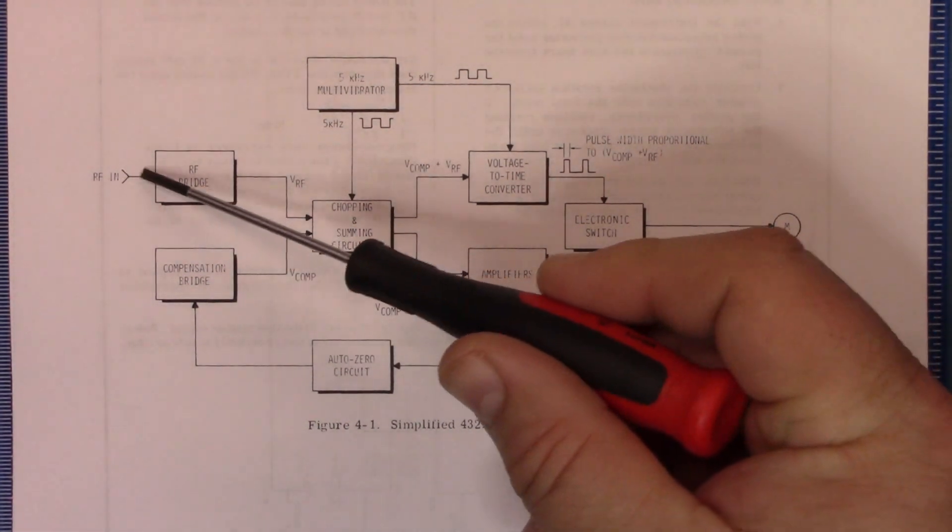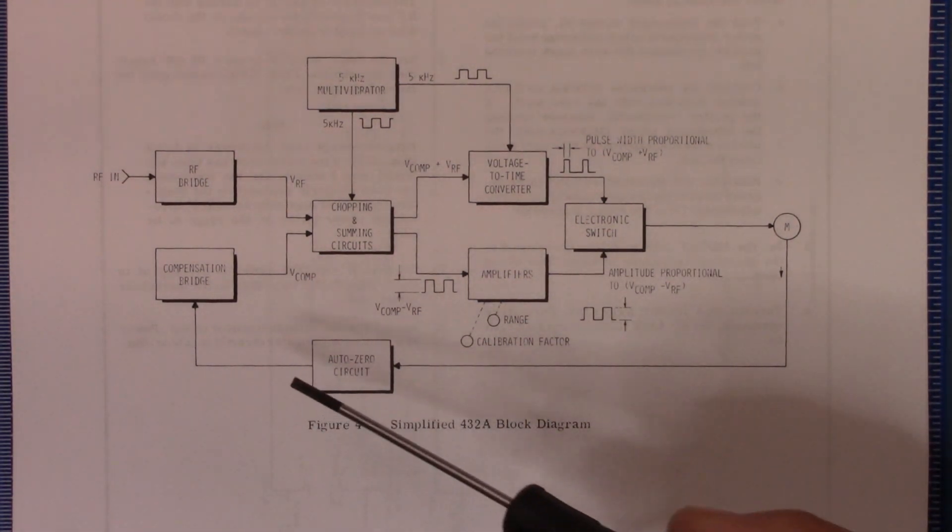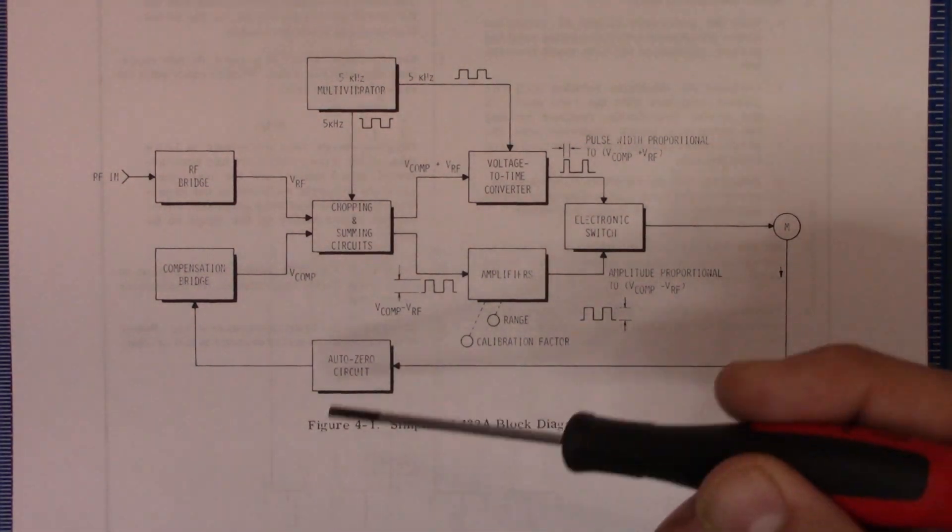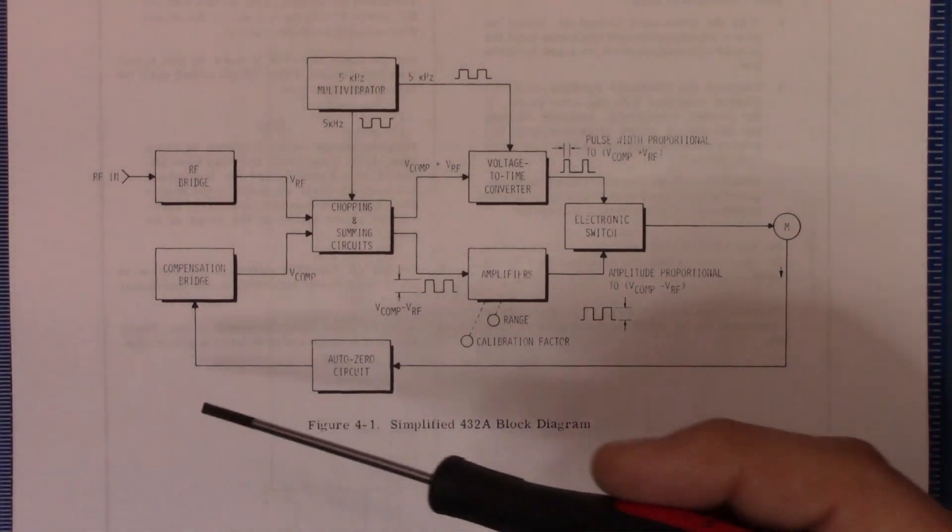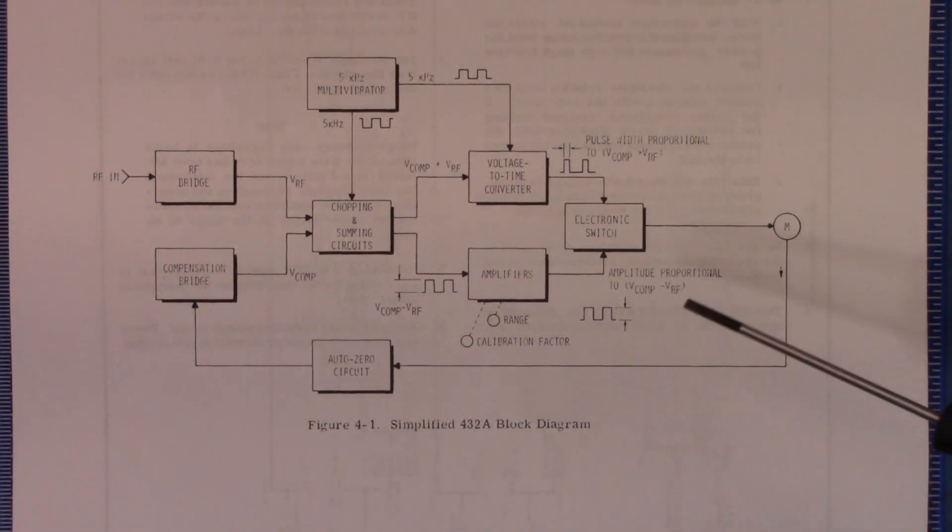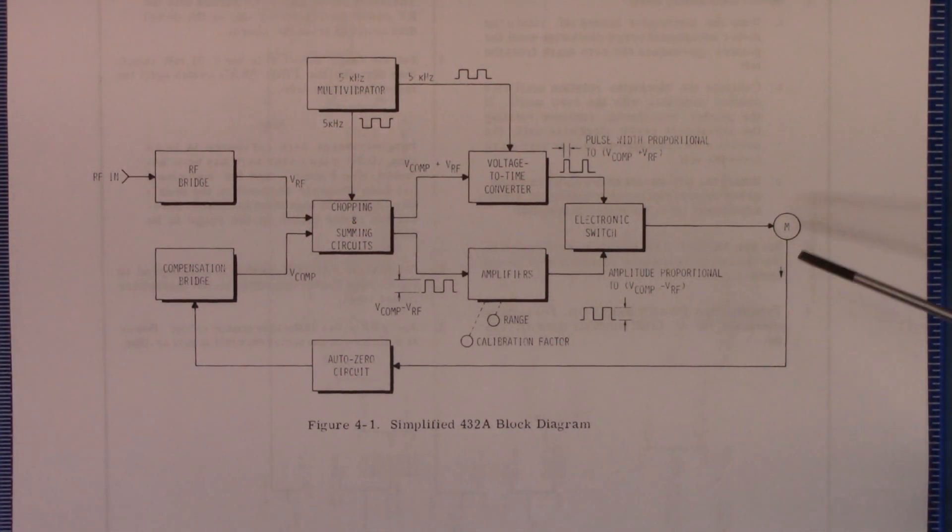They have one which is exposed to the RF energy and then one which is a compensation mount, which is picking up basically the ambient temperature and it's isolated from the incoming RF. That way, what the system can do is basically add together and subtract the effect from the temperature that the environment is in. So you get a signal on the meter that is proportional to the incoming RF power.